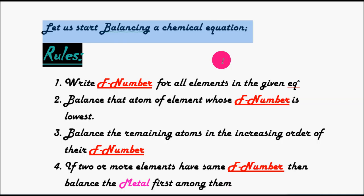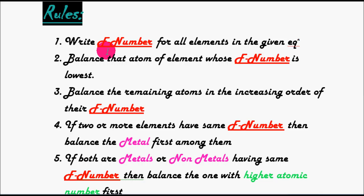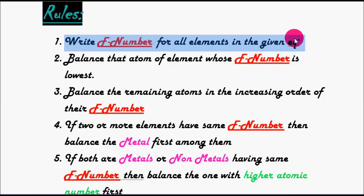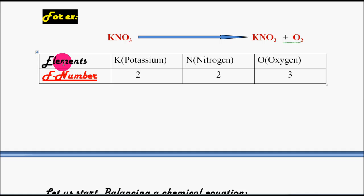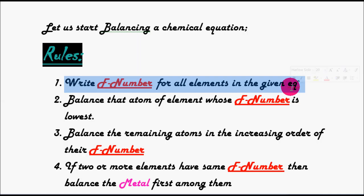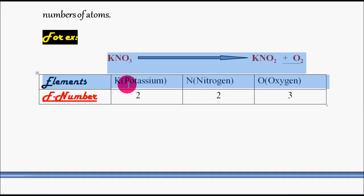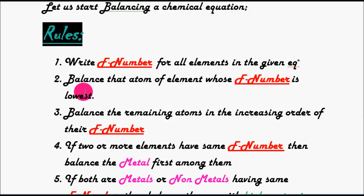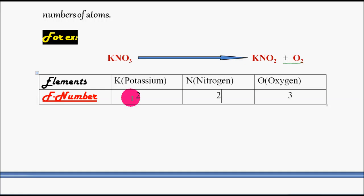Now coming to the rules before starting how to balance a chemical equation using the frequency number method. The very first rule is: write the frequency number for all elements in the given equation. You have to note down all the atoms present in the equation, as we did in the above case — potassium, nitrogen, oxygen — and find out the frequency number for each. The second rule is: balance the atom whose frequency number is the lowest.